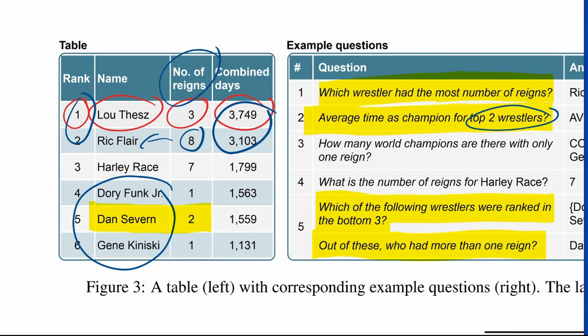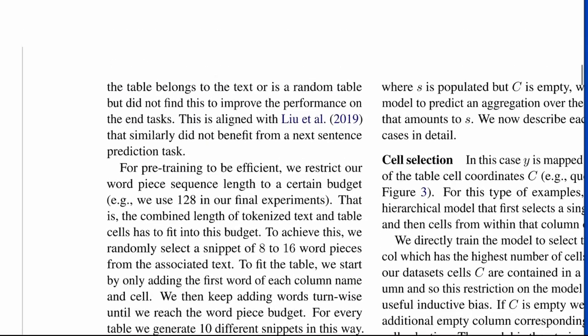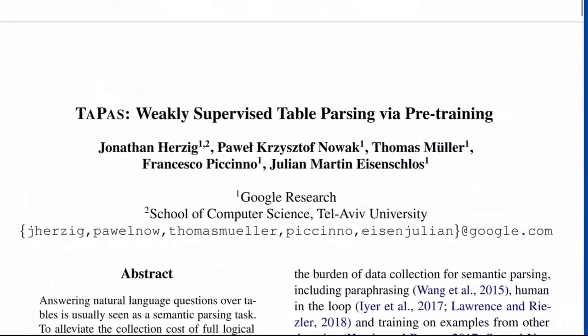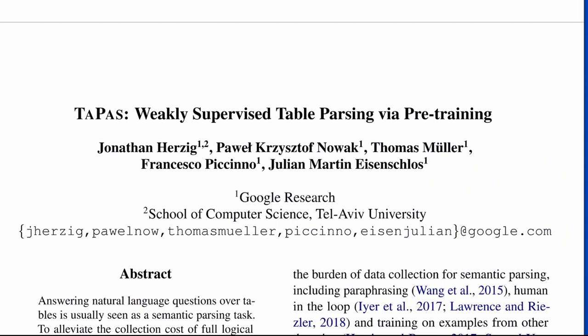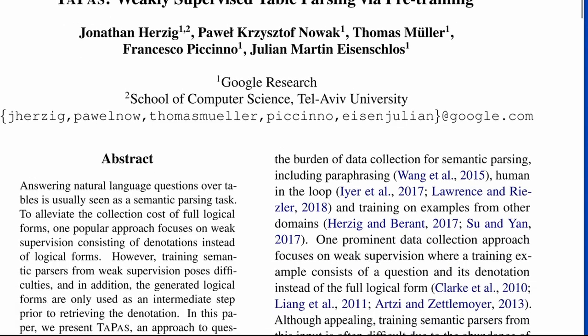The paper we're discussing is trying to answer questions like this when given a table. As you can see, this is a pretty hard task, so I'm pretty excited to read this. The paper is called TAPAS: Weakly Supervised Table Parsing via Pre-Training, by Jonathan Herzig, Pavel Kristof Novak, Thomas Müller, Francesco Piccino, and Julian Martin Eisenschloss. Full disclaimer — I know these people, so I might be slightly biased.